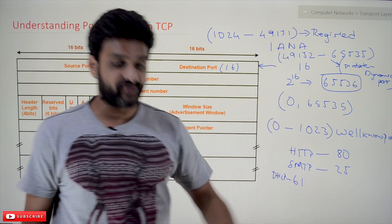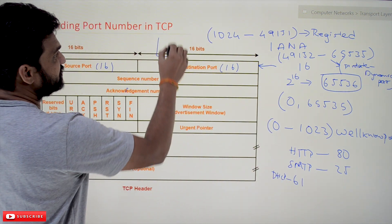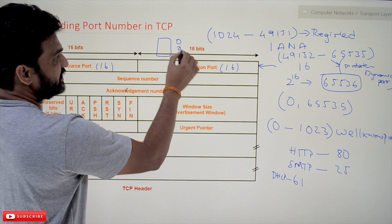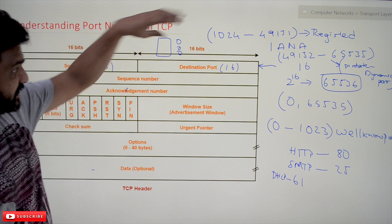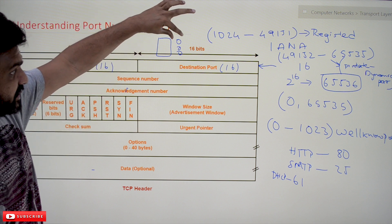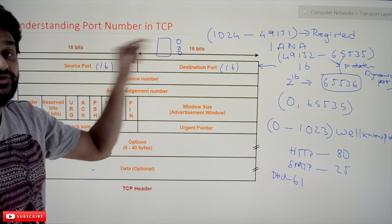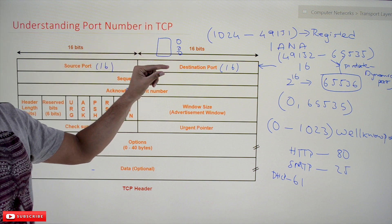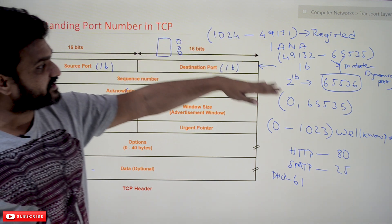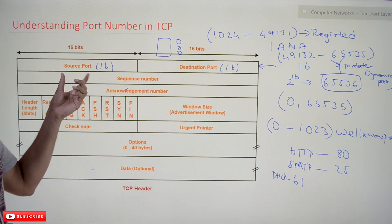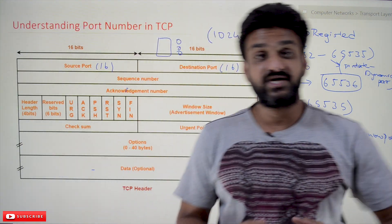For example, in the source system if you are having 10 processes running and they are communicating with different servers, each process will get a unique port number. This is all the different categorization of the port numbers. This is all about the first row of the TCP header which describes the source port number and the destination port number.